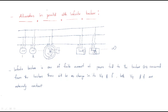In this session we will discuss alternators in parallel with an infinite bus bar. If we have some alternators, those alternators are parallely operated with the infinite bus bar. Here we have alternator one connected to an infinite bus bar, alternator two, and a third alternator. The infinite bus bar consists of an infinite number of loads — load one, load two, and so on.